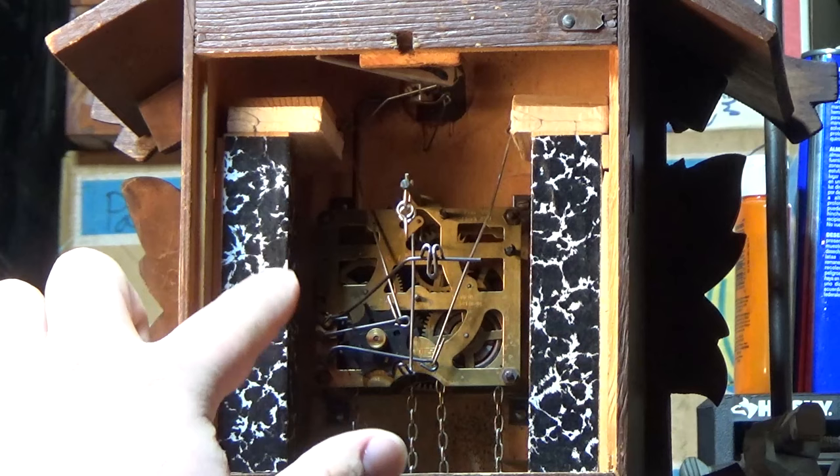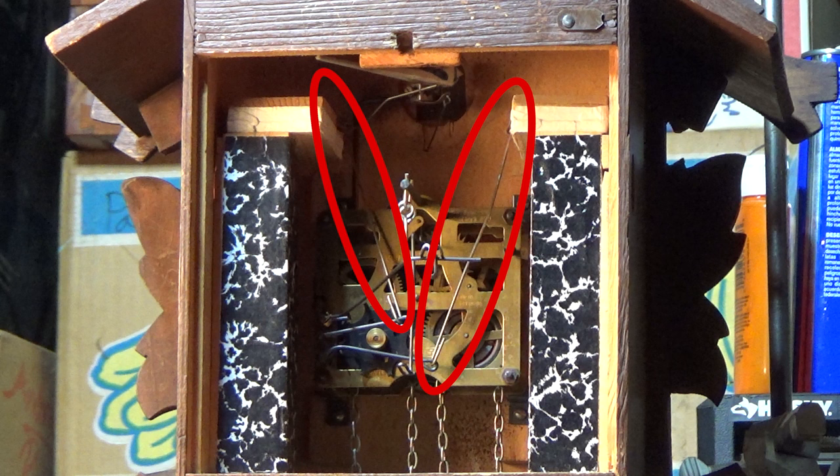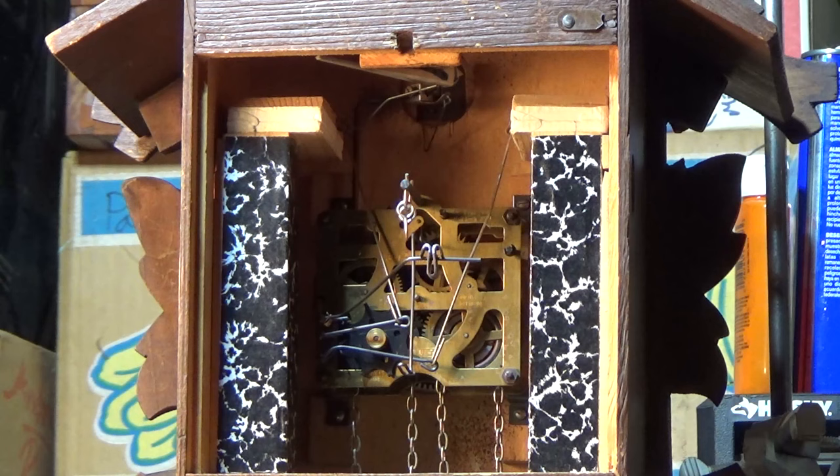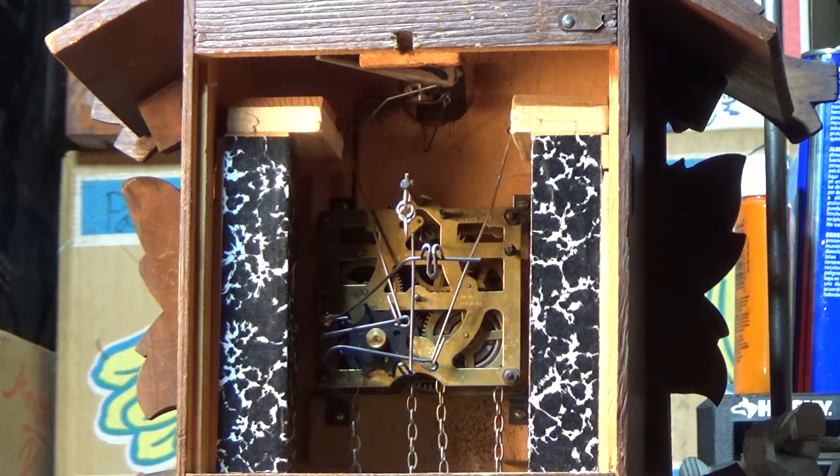Next, we'll tackle the bellows. We don't need to remove the wires attached to the levers on the back of the movement, as they are removed and installed along with the bellows. We'll start by removing the bellow on the left. In this case, it doesn't matter which one we take out first, but in more complex cuckoo clocks, it is sometimes necessary to assess the best order to remove them.